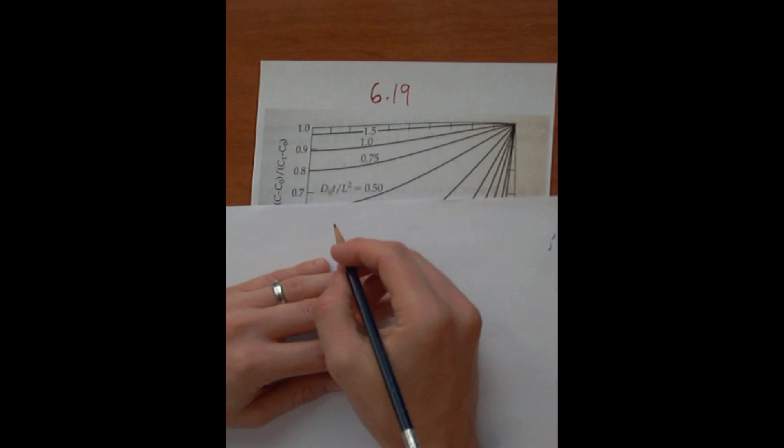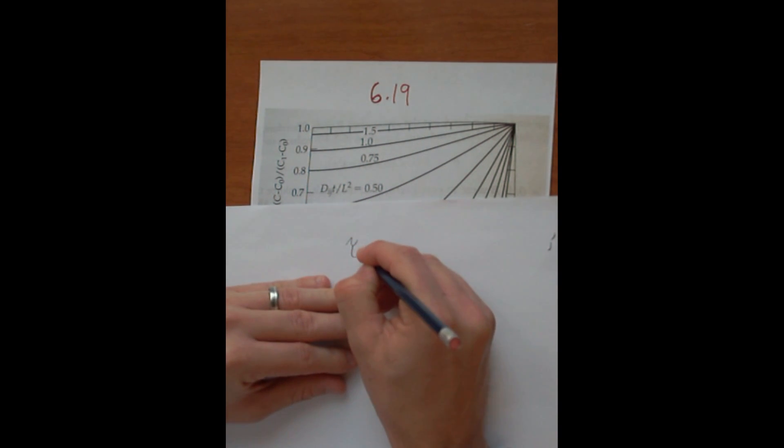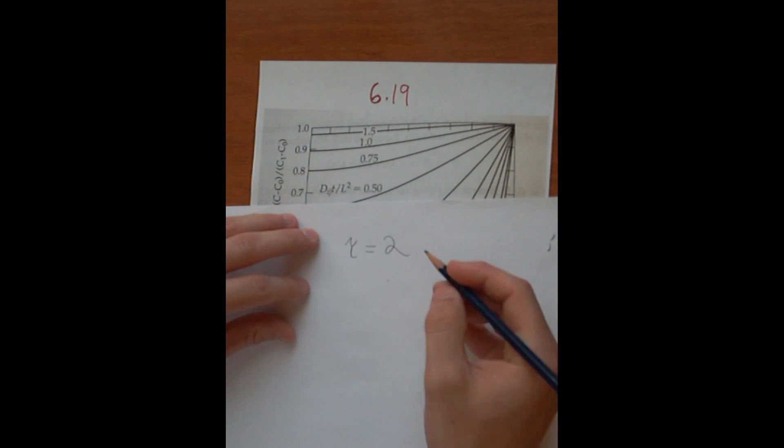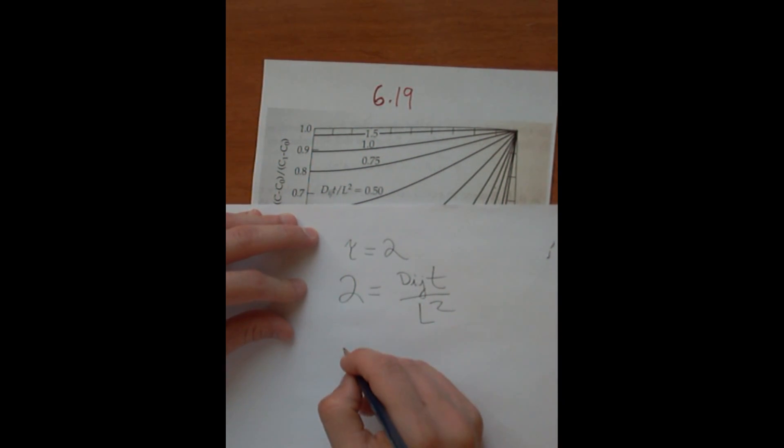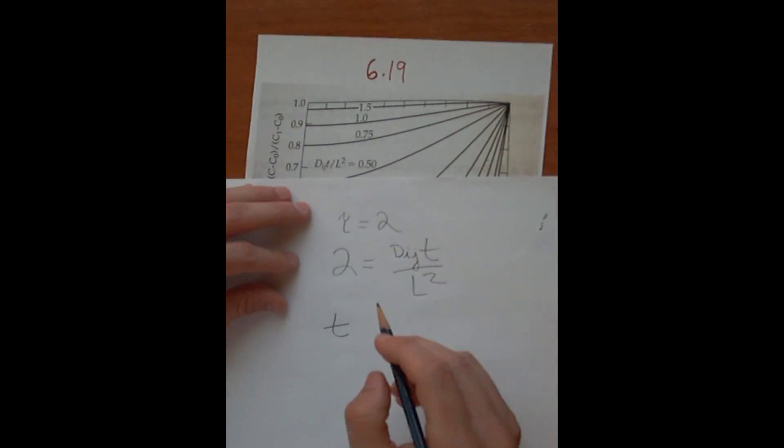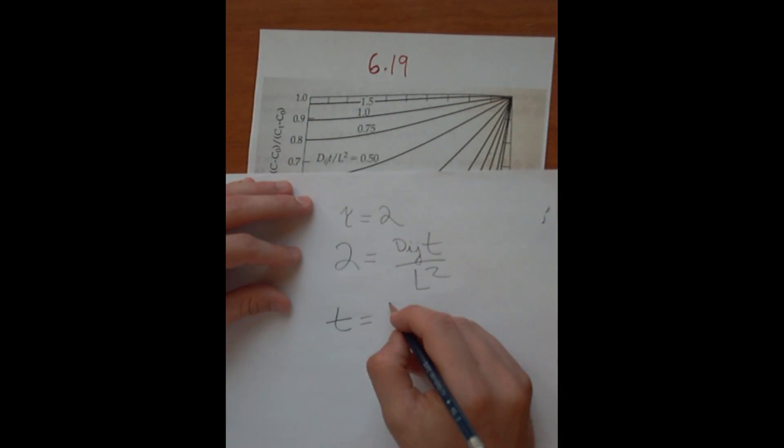So you can easily figure out that the time to reach steady state if tau is equal to 2, then 2 equals DijT over L squared. So the time to reach steady state would be T equals 2L squared over Dij.